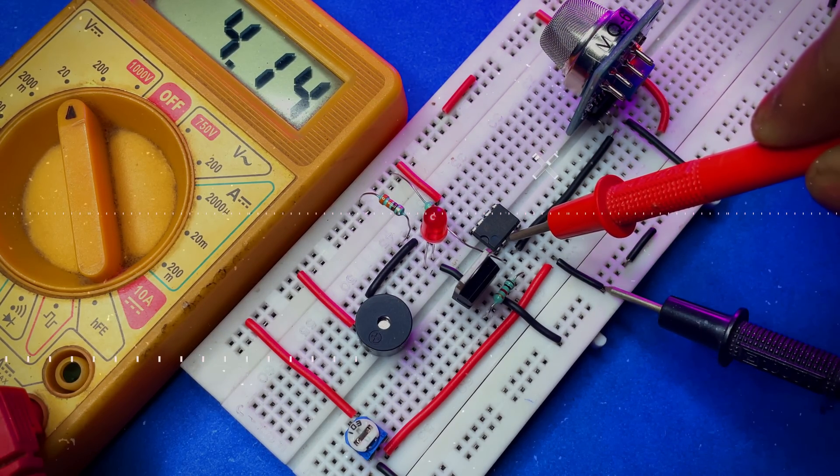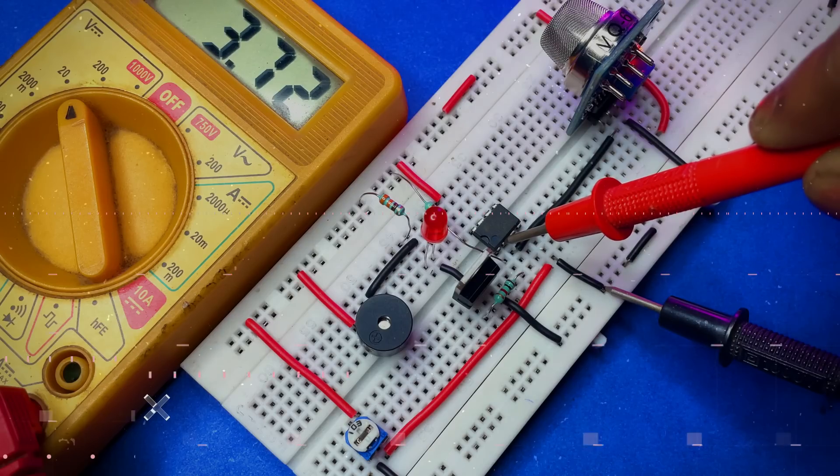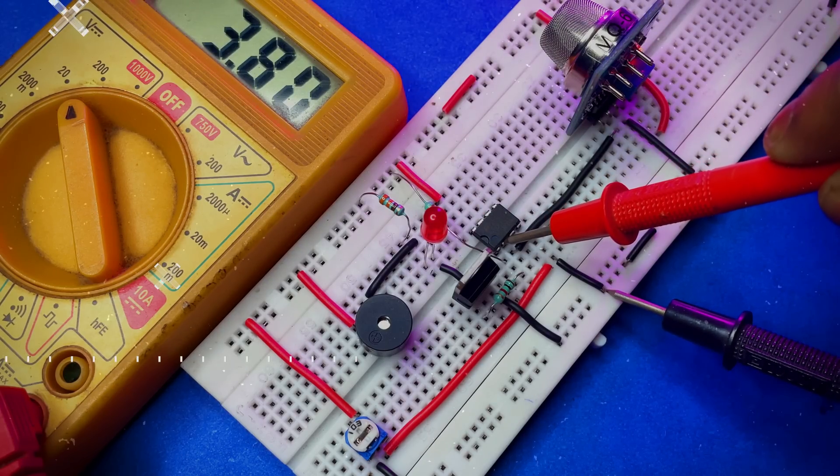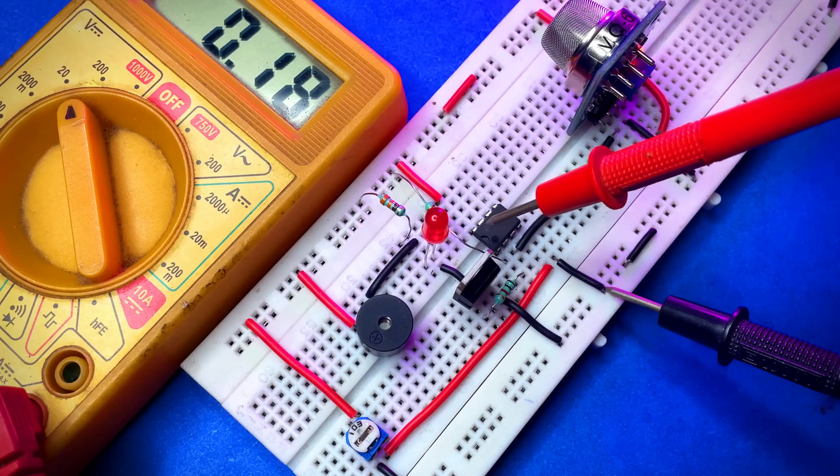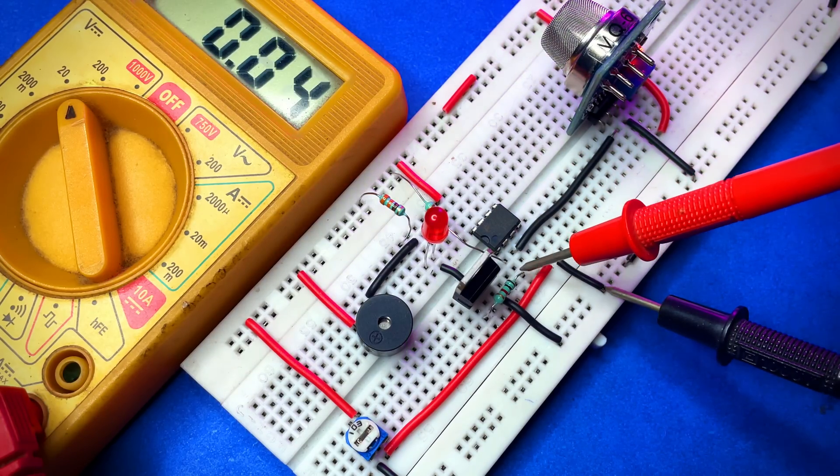As of now in this condition the non-inverting pin is lower than the inverting pin. As a result the output will be low and the LED will not blink. So you can see the output voltage is 0.24V across the 1k resistor. That means it cannot drive this transistor properly.